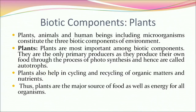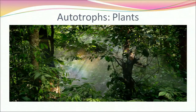Biotic components include plants, animals and human beings, including microorganisms. Plants are most important among biotic components. They are the only primary producers, as they produce their own food through the process of photosynthesis, and hence are called autotrophs. Plants also help in cycling and recycling of organic matters and nutrients, making them the major source of food as well as energy for all organisms.